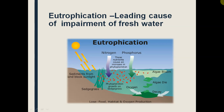Due to algae and eutrophication, the quality of water is a problem for fish as well. When algae die and sink to the bottom of the lake, the decaying algae consume even more oxygen, which is a significant problem. Therefore, it is very important to judge the water quality for underwater life.